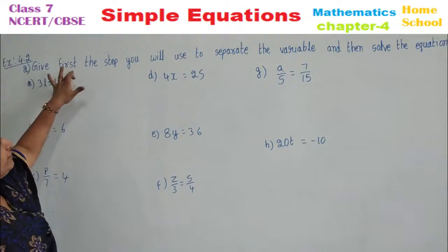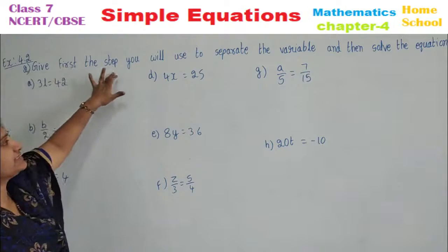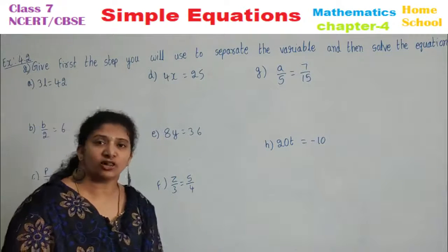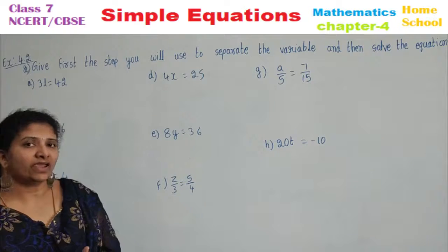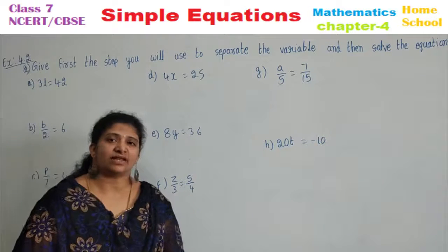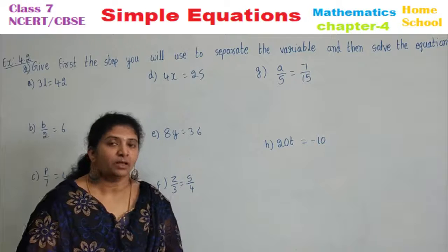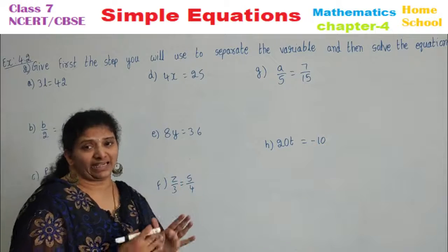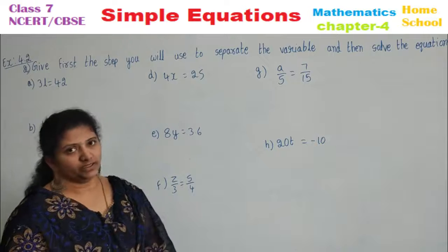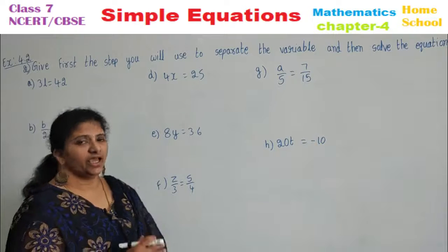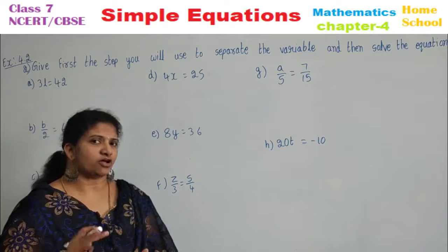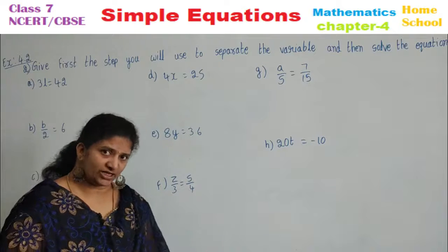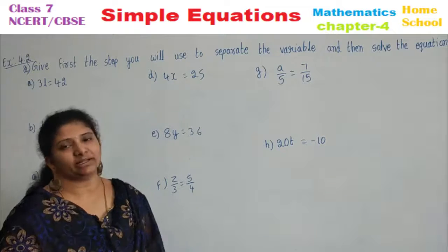Second main: give the first step you will use to separate the variable and then solve the equation, similarly to how we did the first main. But in this main, the variables are followed with multiplication or division. If you have multiplication, its opposite is division; if you have division, its opposite is multiplication.